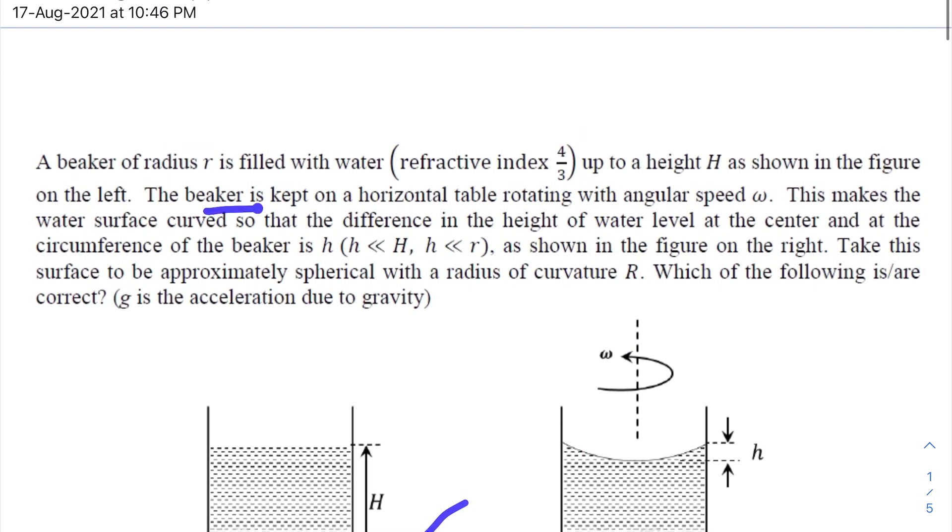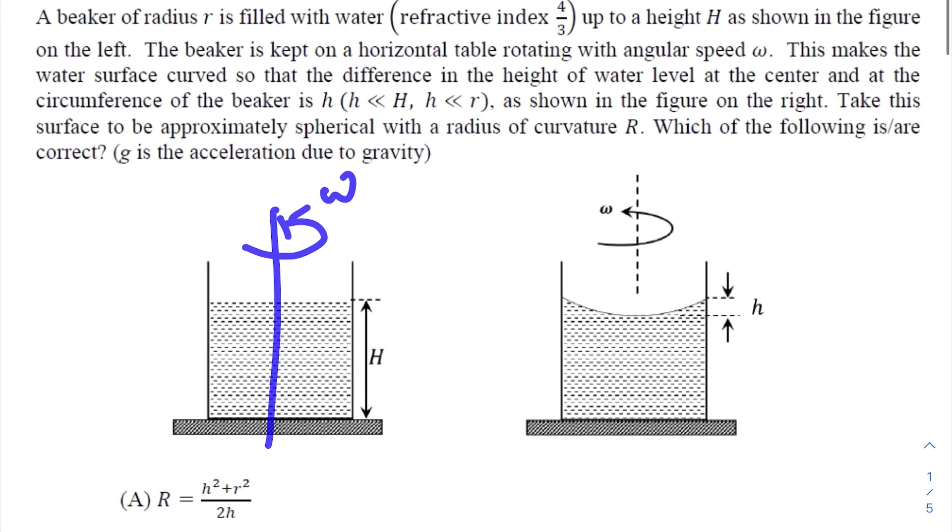The beaker is kept on a horizontal table rotating with angular speed ω. Now if this rotates with angular speed ω, the top layer will form the shape of a parabola in two-dimensional plane, or a paraboloid in a three-dimensional plane. This makes the water curved so that the difference of height - the height of water level at the center...